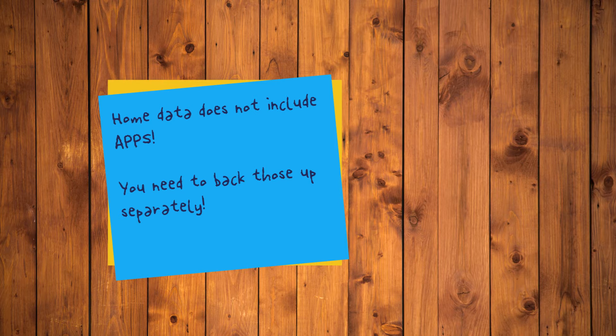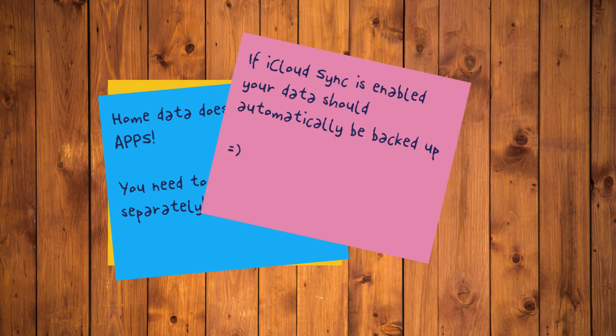The first step before merging the two accounts is to export all your basic data. This includes contacts, reminders, calendars, notes, Safari bookmarks, etc. If iCloud Sync is enabled on your device, your data should automatically be backed up to iCloud, and you can easily access it on your other account by simply turning on iCloud Sync. If you don't use iCloud Sync, you can choose to create an Apple ID, sync all the data with it, then log into the iCloud account on your other account to access your data.